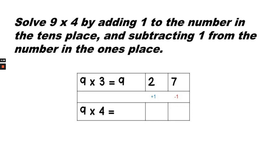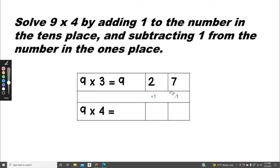Let's solve 9 times 4 using the same strategy. Remember, to solve, we're going to subtract 1 from the ones place, so 7 minus 1 equals 6. And we're going to add 1 to the tens place, so 2 plus 1 equals 3. So 9 times 4 equals 36.